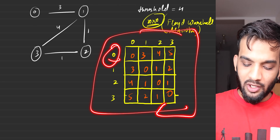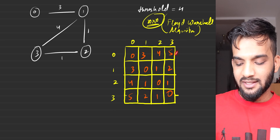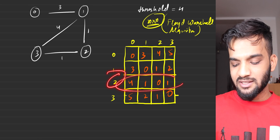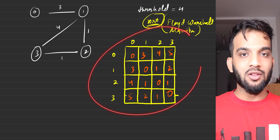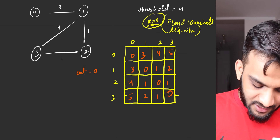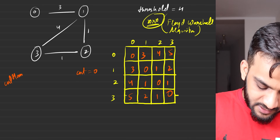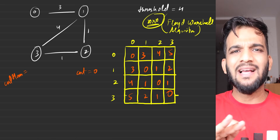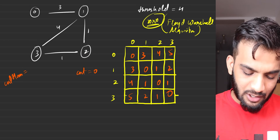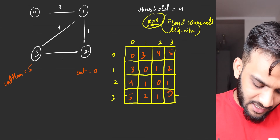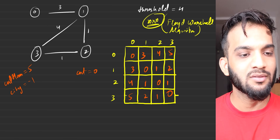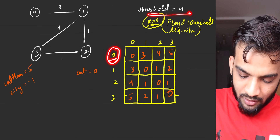I've filled up the 2D matrix. For city 0, these are the distances to cities 0, 1, 2, 3. From city 1 to cities 0, 1, 2, 3 — these are the distances. Similarly for cities 2 and 3. Now I'll keep a counter equal to 0 and a counter_max set to something larger than the maximum number of cities — say 5 for 4 cities — and a city variable set to minus one initially.